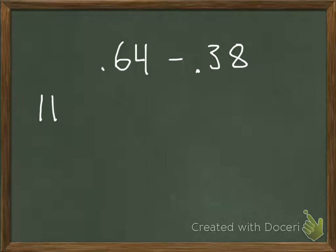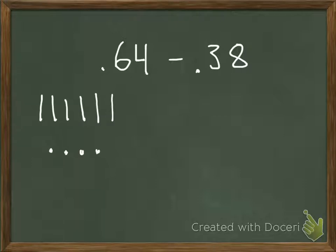I'm going to represent 64 hundredths with 6 tenths and 4 hundredths. I start with my smallest place, and I need to take 8 hundredths away from the 4 hundredths that I have. But the problem is I can't take 8 hundredths away from 4 hundredths, because I only have 4 hundredths. So I'm going to regroup — I'm going to take away one of the tenths and replace it with 10 hundredths, because there are 10 hundredths in one tenths piece.